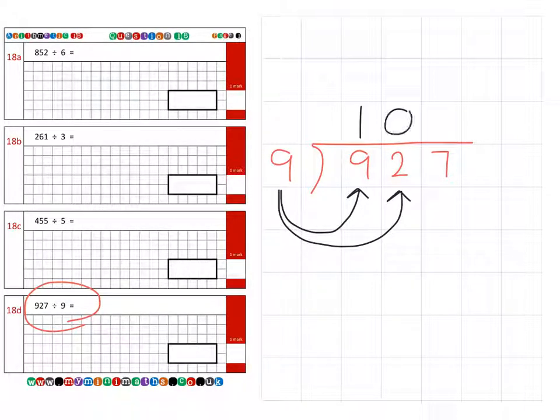Well, that won't fit, so we place a 0 above the tens column and we carry the unused 2 over to the units. Finally, how many nines fit into 27? Well, that goes 3. So the final answer for the fourth question is 103.